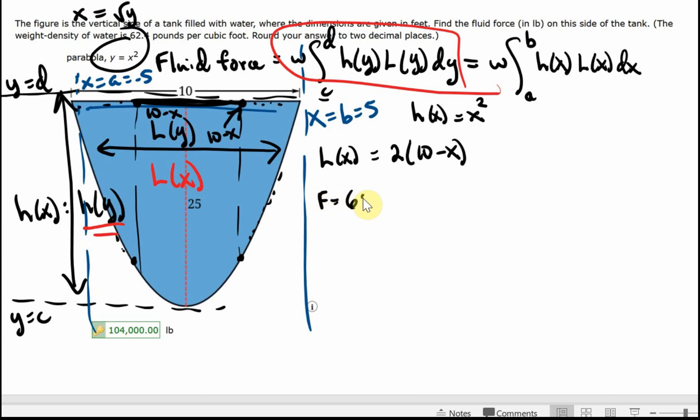Fluid force is that weight density of the water times the integral from negative 5 to 5. Here I have this height, which is, I'm just going to write this as 20 minus 2X. So this is 20 minus 2X times the length, and the length is 20 minus 2X. The height is X. The length is 20 minus 2X.